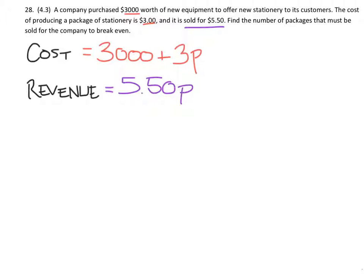So how are these related? Well, in the problem, we want to find the number of packages that must be sold for the company to break even. So when they break even, that means that the costs are equal to the revenue. So they'll be even. They haven't lost any money, but they haven't gained any money outside of the cost. So we just replace the cost and revenue with their respective equations.